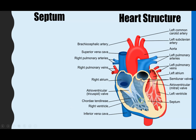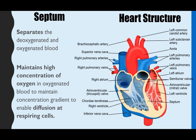The last structure is the septum — a piece of cardiac muscle that runs all the way down the middle, separating the left and the right side of the heart. It separates oxygenated blood from deoxygenated blood. This is important because it means the oxygenated blood isn't being diluted, maintaining a very high concentration of oxygen. That concentration gradient is preserved when blood reaches respiring cells, so oxygen can diffuse from the blood into those cells.